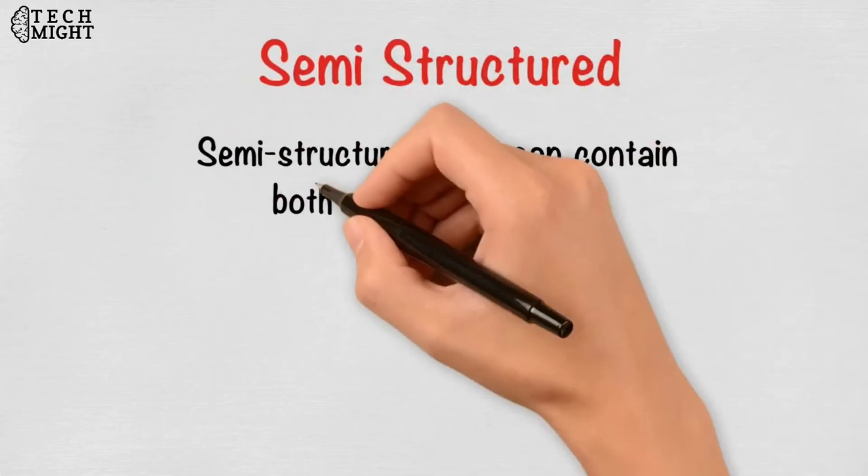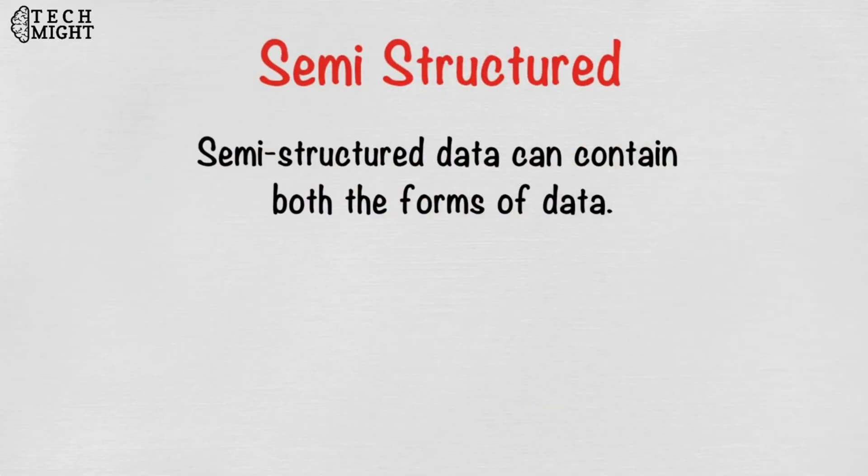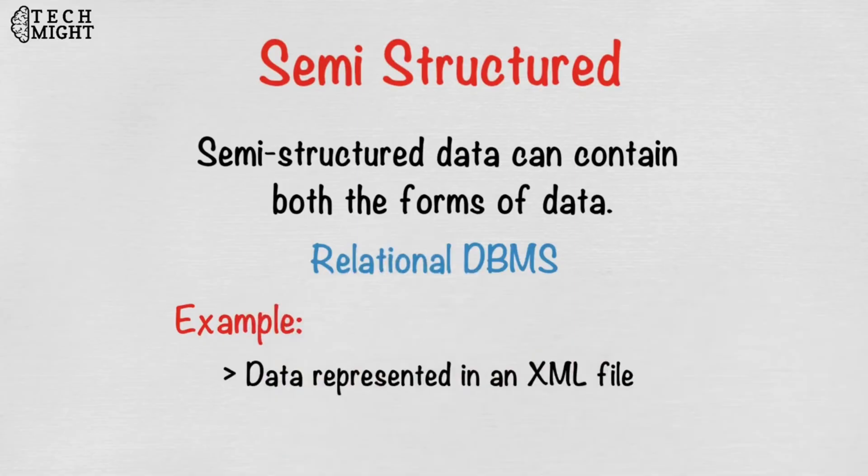Semi-structured data can contain both forms of data. We can see semi-structured data as structured in form but it is actually not defined, like with a table definition in relational database management system. Example of semi-structured data is data represented in an XML file.